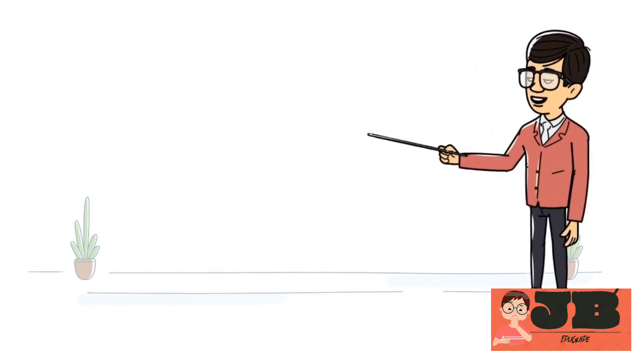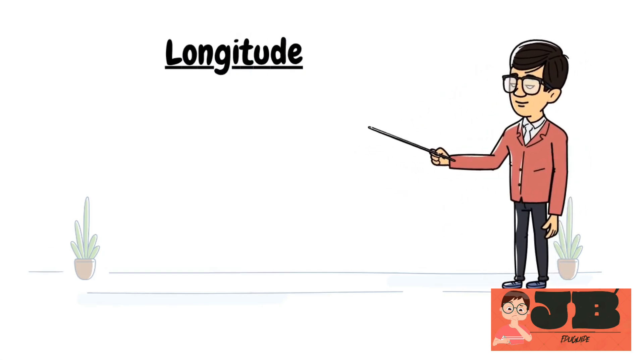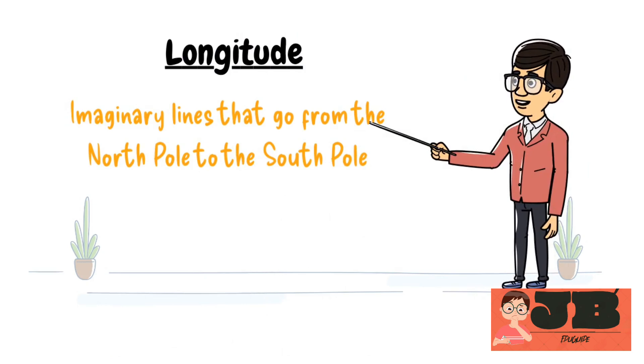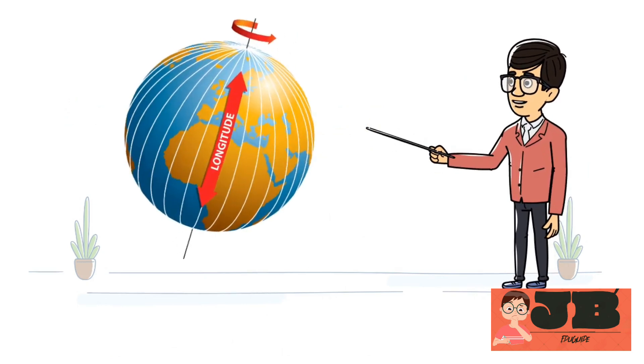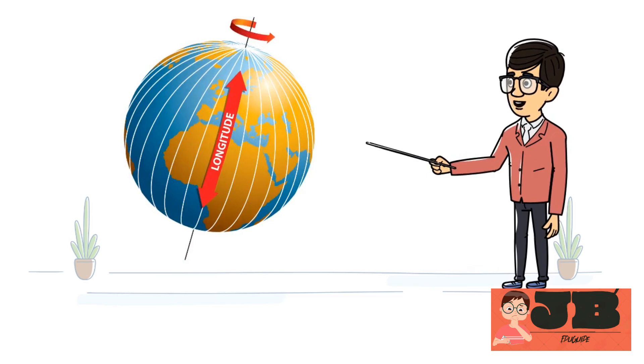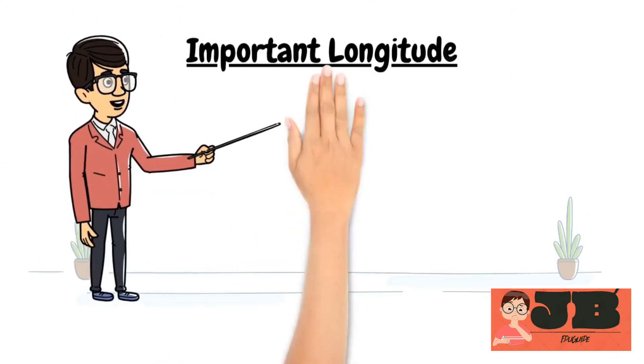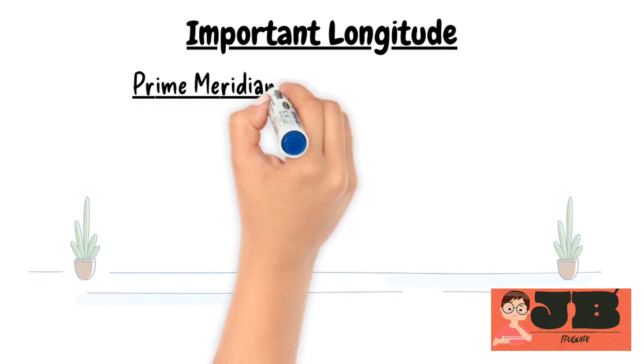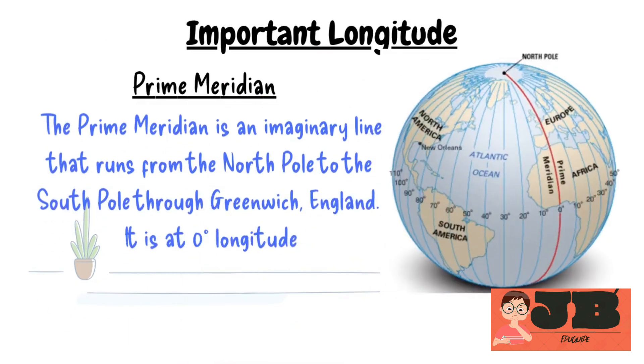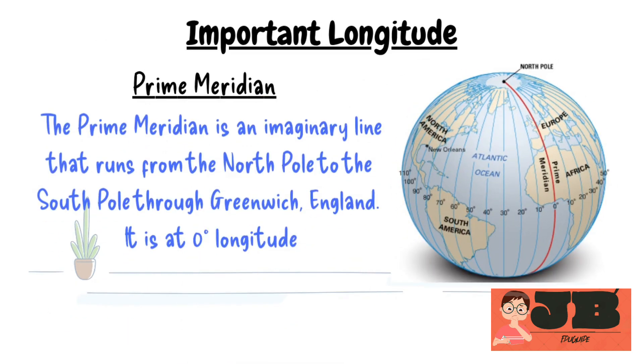Let's understand about longitude. So what is longitude? Longitudes are lines that go from the north pole to the south pole. You can see the white lines running from north pole to south pole. Let's move to different important longitudes. First, the prime meridian. The prime meridian is an imaginary line that runs from the north pole to the south pole through Greenwich England. It is at zero degrees longitude.